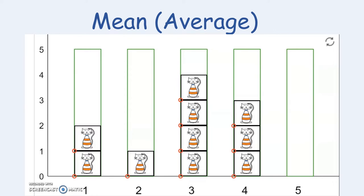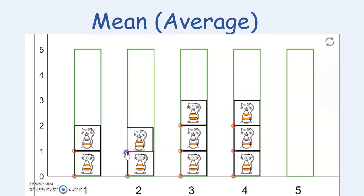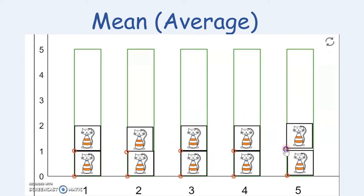First, let's count up how many cats there are: one, two, three, four, five, six, seven, eight, nine, ten. There are ten cats in total and there are five crates. So I am going to take some cats from crate three and begin to distribute them to the places where there were no cats. All of my crates now have the same number of cats. I took ten cats and divided them evenly into five crates, which meant the average cat per crate would be two cats.